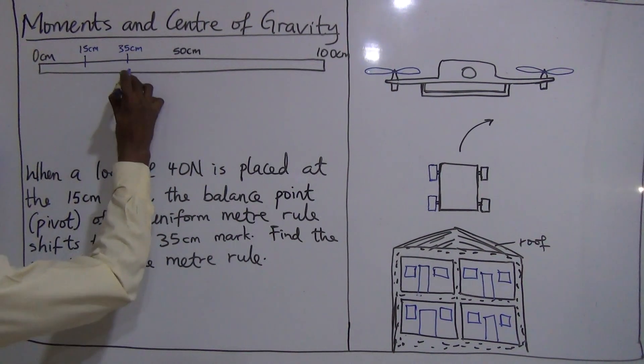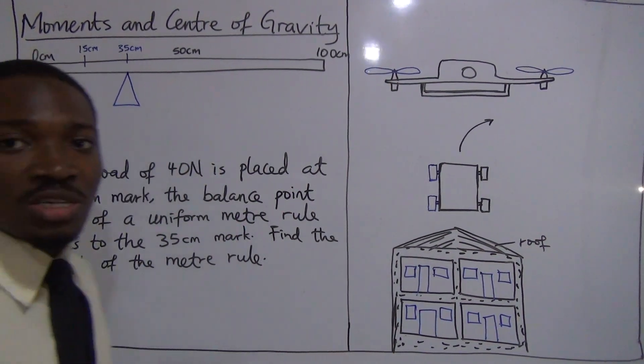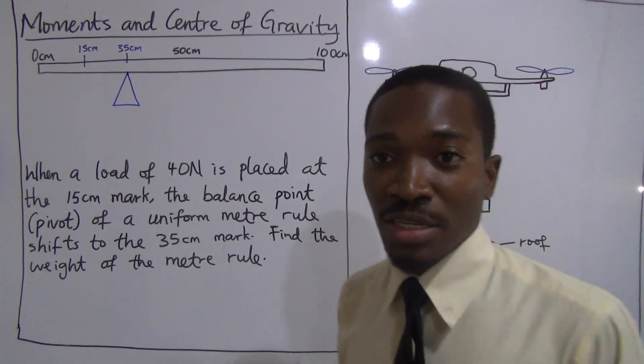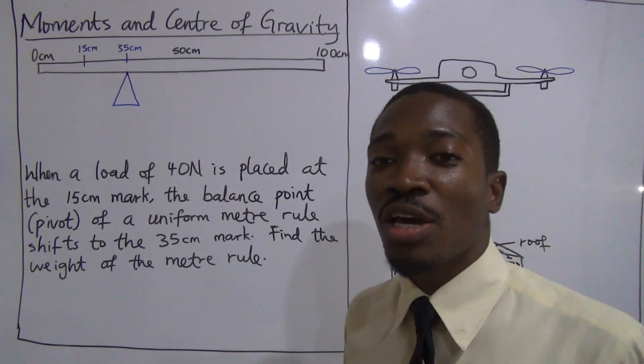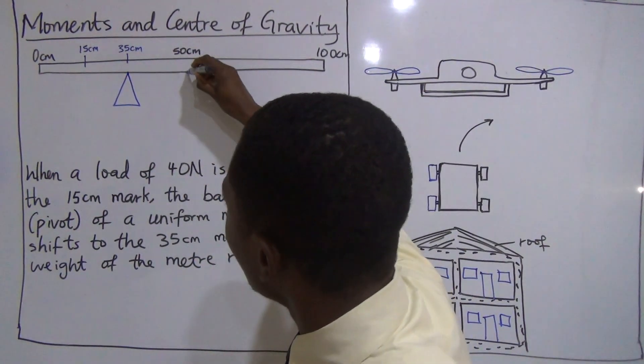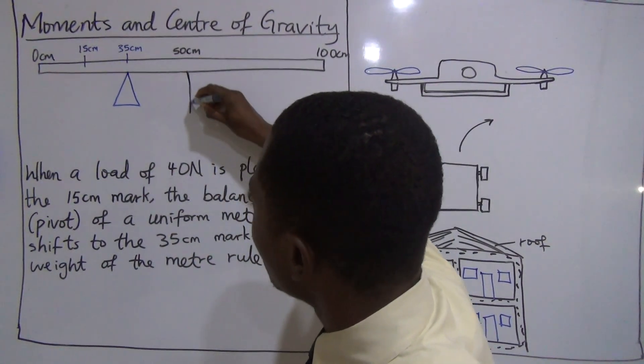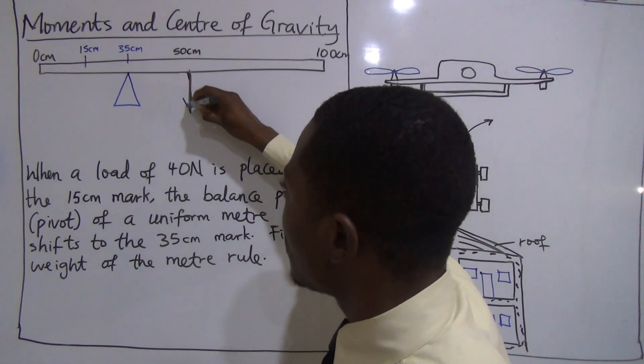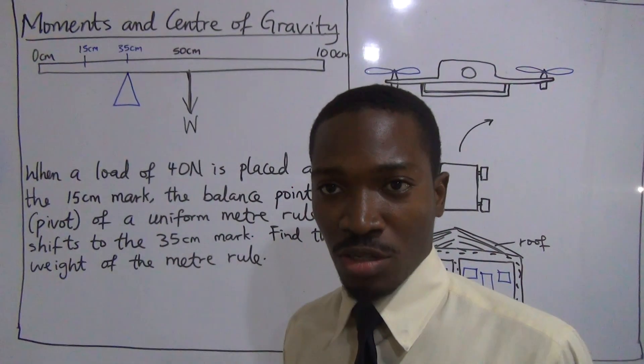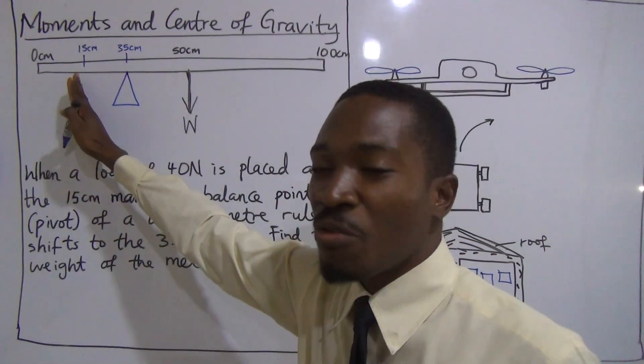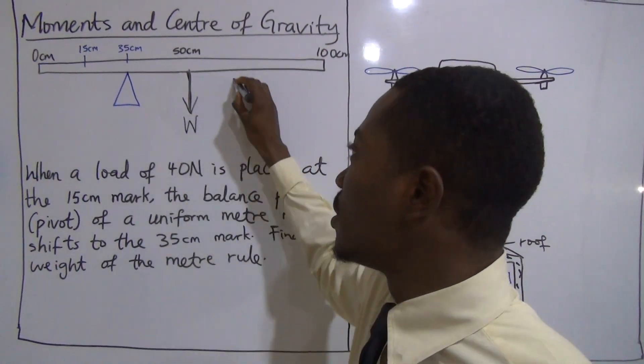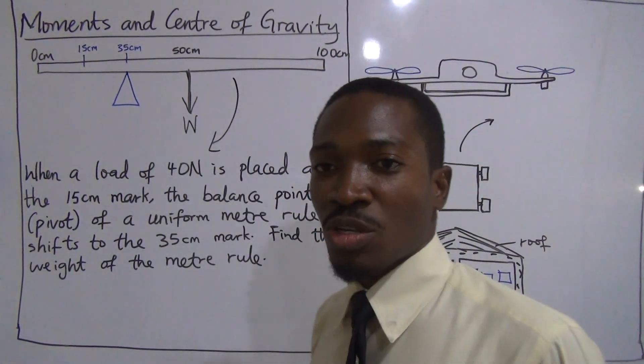When I shift the pivot to the 35 centimeters mark, what happens to the meter? There will be a resultant clockwise moment. Why? Because the center of gravity remains at the 50 centimeters mark. Hence, this is where the weight of this meter will be concentrated. So because there is no force on the other side to balance this force on the right hand side, there will be a resultant clockwise moment.